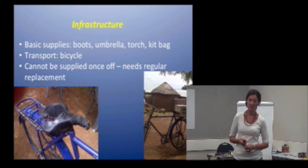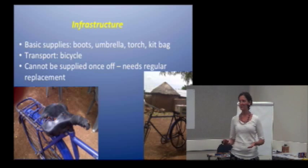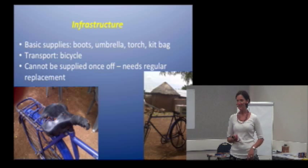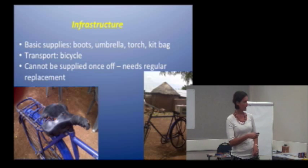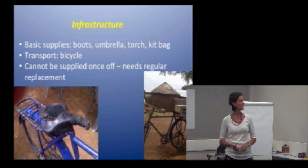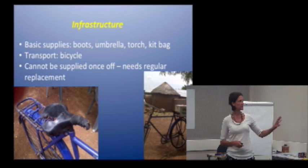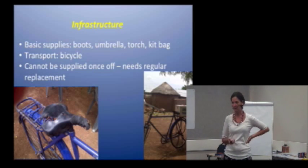On supplies and logistics: a bicycle given to a community health worker in Ghana was barely rideable. Bicycles are typically given when someone is hired and expected to last their entire employment. But tyres and spares need to be factored into programs — it's not a once-off expense. Other necessary equipment includes boots for the rainy season, an umbrella, a torch for night visits, and a kit bag. These items are often given once and never replaced, yet they are regular operational requirements.